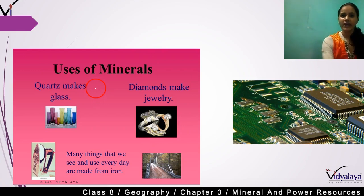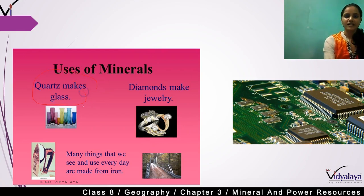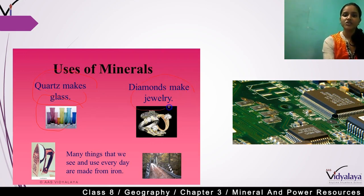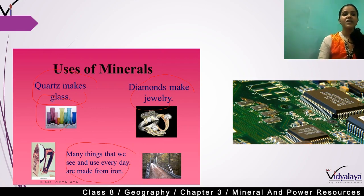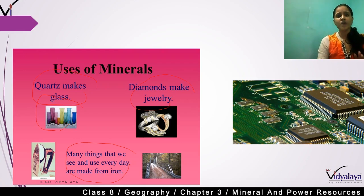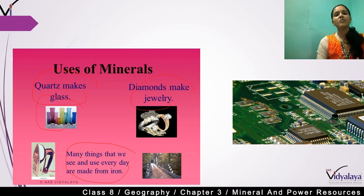Another type of mineral is used to make glass — beautiful flower vases are made through this. Diamonds are used to make jewelry. Also, many things we see and use every day are made from iron — for example, railway lines and pressing irons.